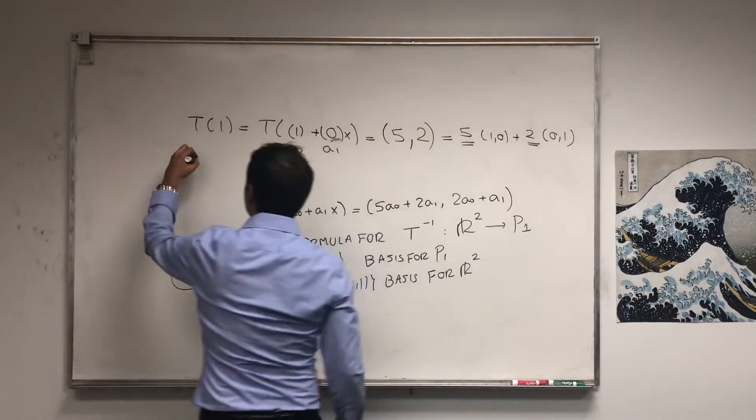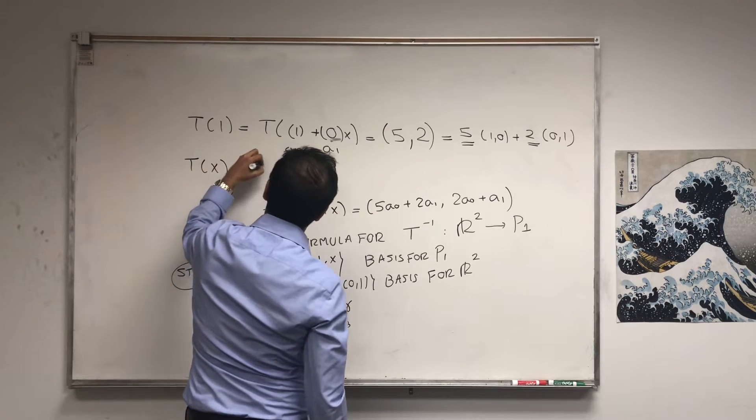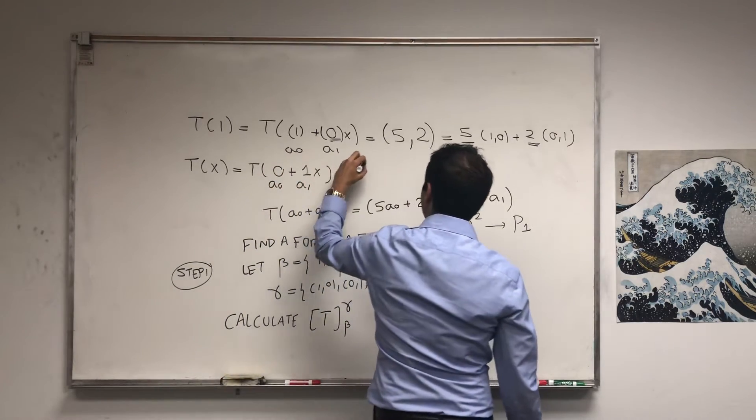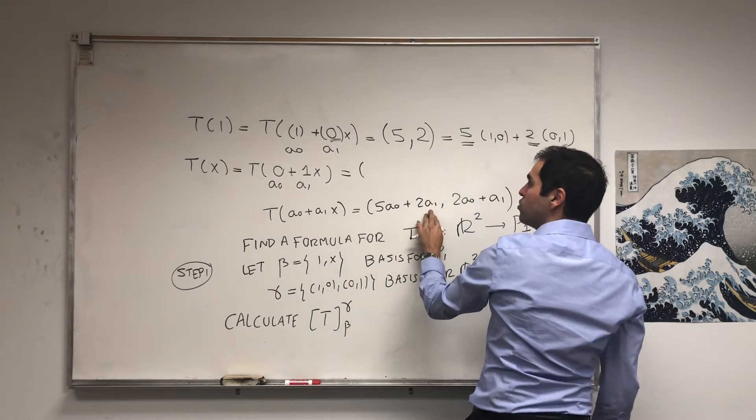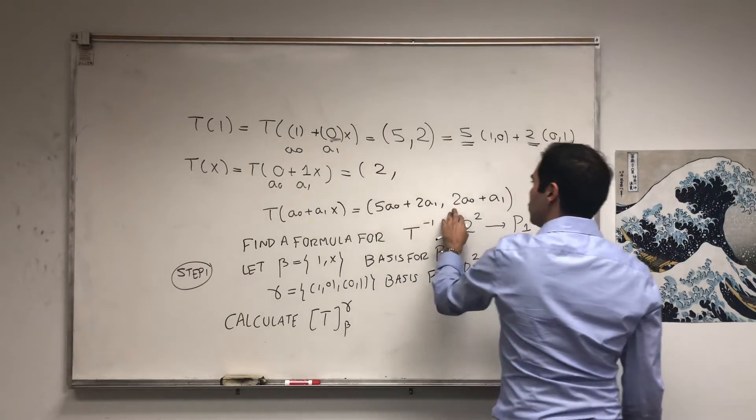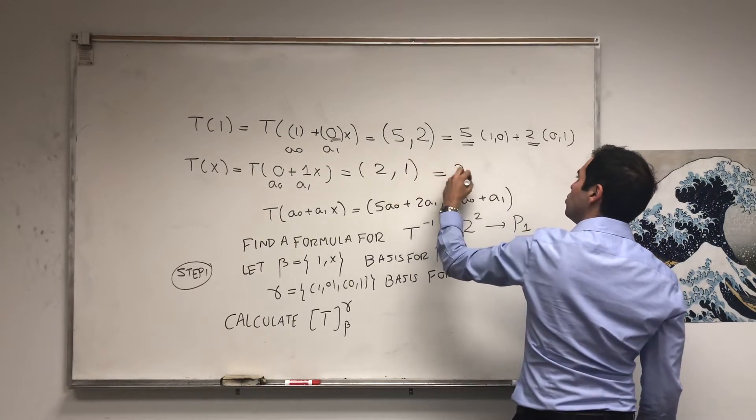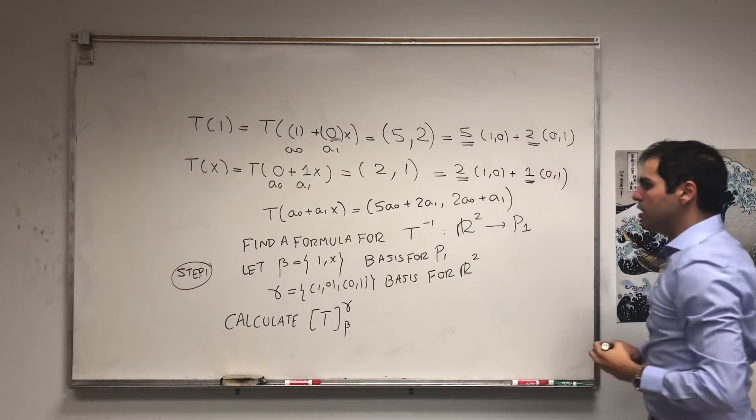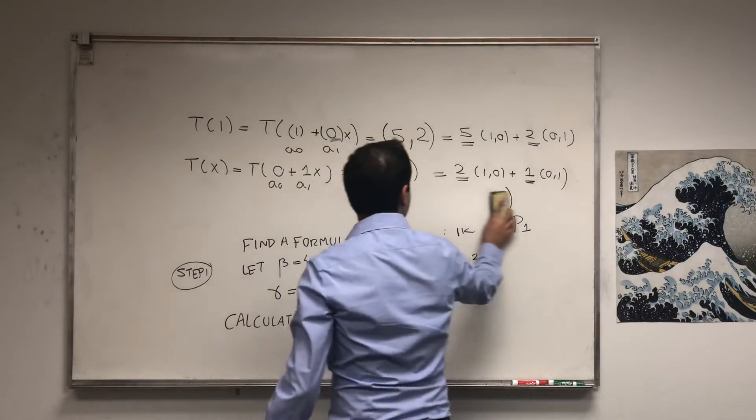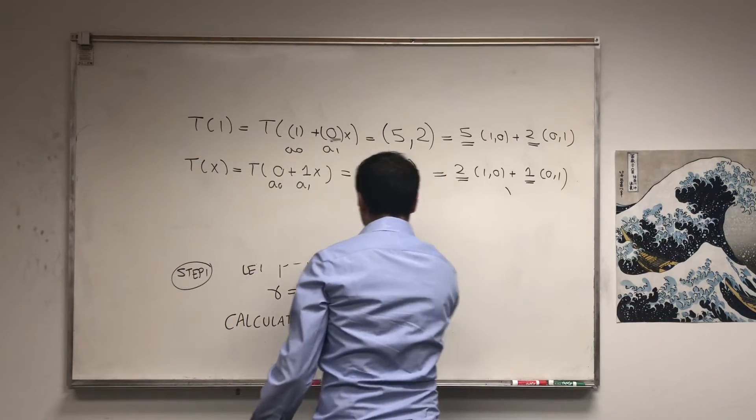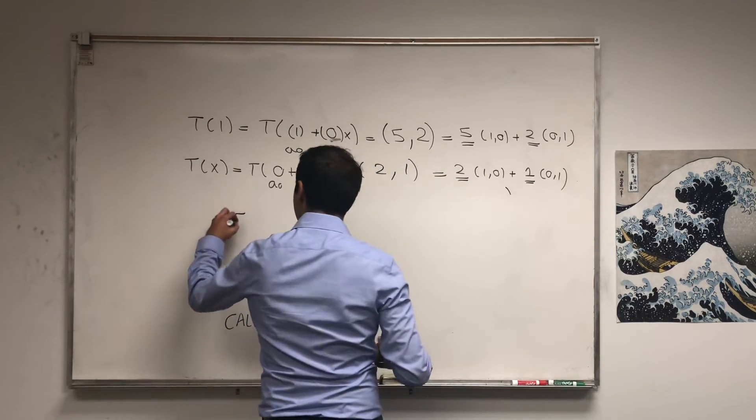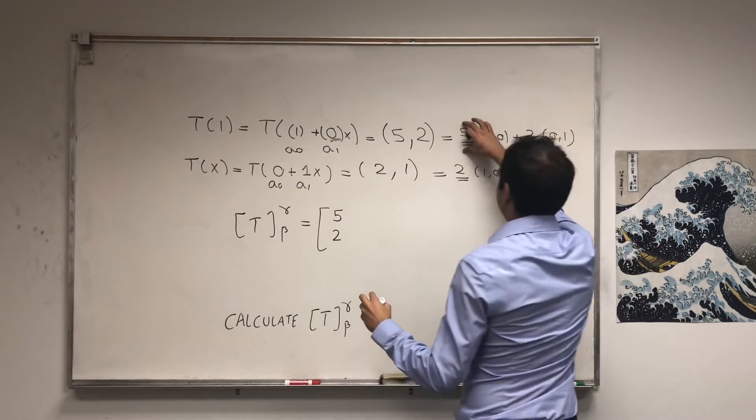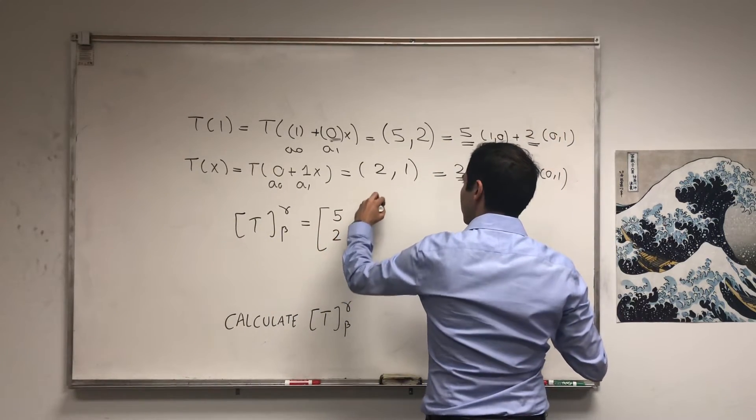And the same thing with x. So, T of x, that's T of 0 plus 1x. So a0 is 0, a1 is 1. And that becomes 5 times 0 plus 2 times 1, so 2, and 2 times 0 plus 1 times 1, which is 1. So 2 times 1,0 plus 1 times 0,1. Which tells you that the matrix of T is just 5,2,2,1. So the matrix from beta to gamma is 5,2 as a column and 2,1 as a column.